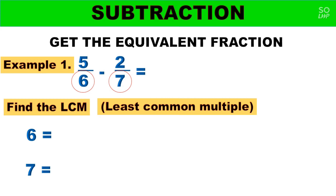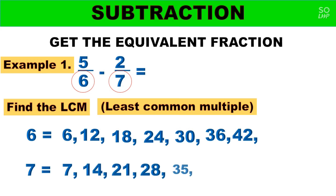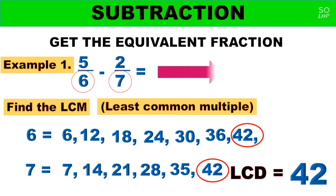We have 6 and 7. Multiples of 6: 6, 12, 18, 24, 30, 36, 42. Multiples of 7: 7, 14, 21, 28, 35, 42. To find the LCD, we choose the common multiple of 6 and 7, which is 42. So that will be our LCD — the least common denominator.